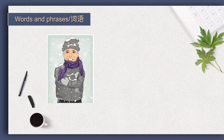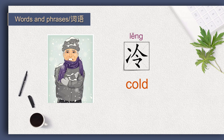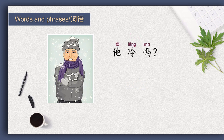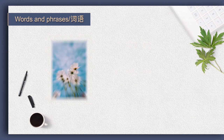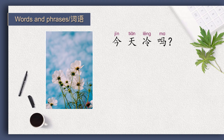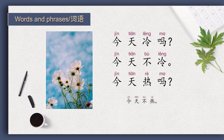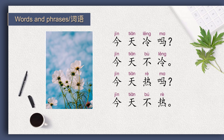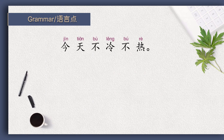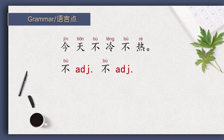As we know, summer is hot while winter is cold. 'Cold' in Chinese is 冷。 它冷吗？ 它很冷。 今天冷吗？ 今天不冷。 今天热吗？ 今天不冷不热。 不...不 is a set phrase. After 不, we can use adjectives which have opposite meanings.